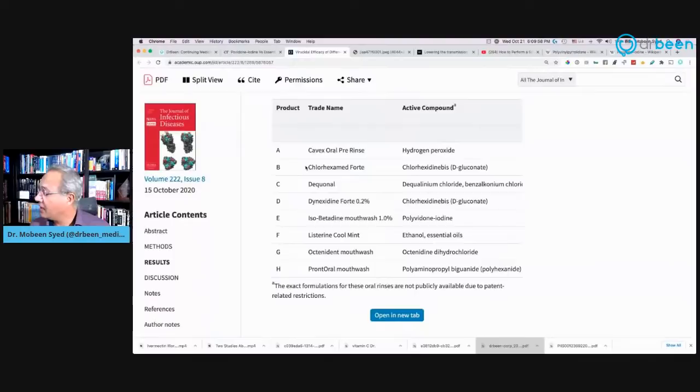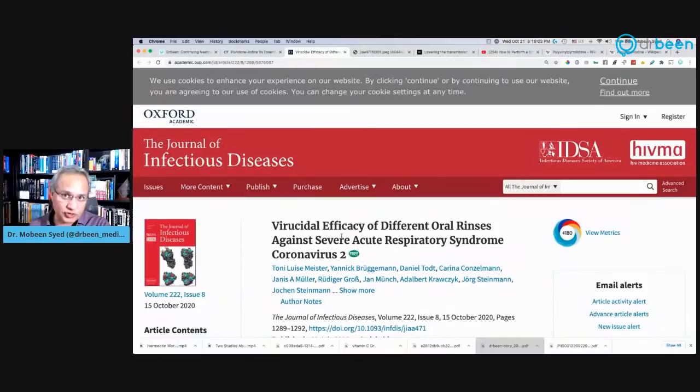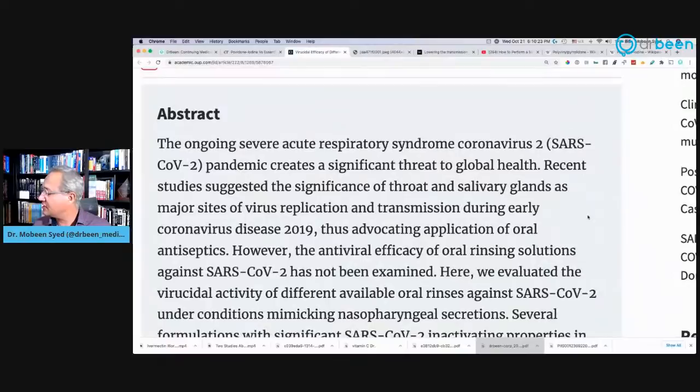Next study is this one. This study is from Germany. And now this is in vitro study. That means it is in the lab. So the study is virucidal efficacy of different oral rinses against severe acute respiratory syndrome virus. So SARS-CoV-2. So this study is in vitro in the lab on SARS-CoV-2. So how did they work on this study? Let me demonstrate that with my illustrations. And then we'll come back here and look at their tables.